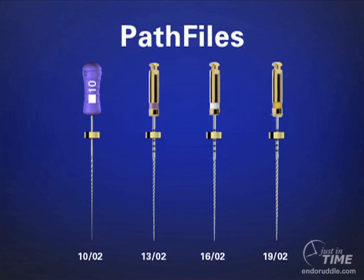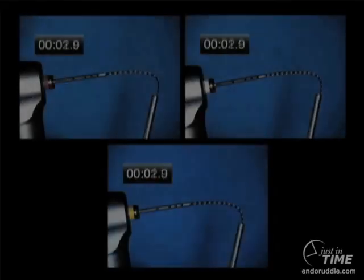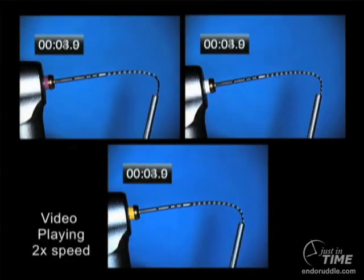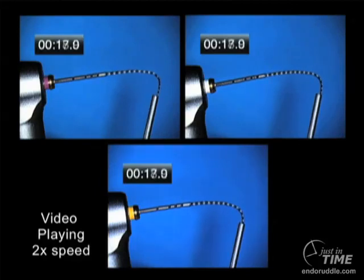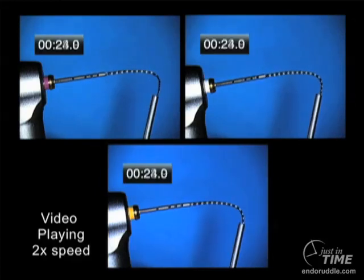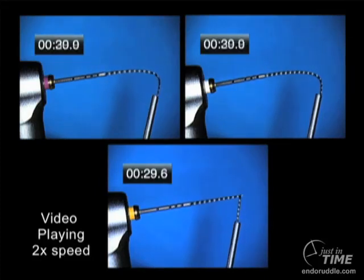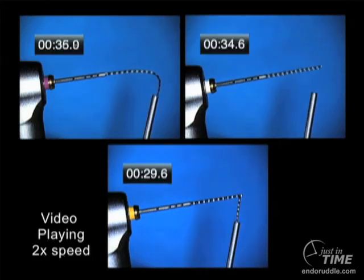Let's look at how we would use three path files to mechanically secure the glide path. I'm playing this video clip at two times the speed. You can see in the bottom image we're spinning the larger diameter yellow band handle — that's the 19 — and then we're using the white one in the upper right, and then finally the purple one.